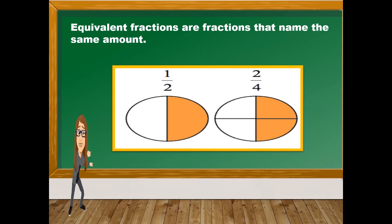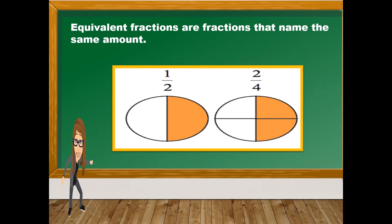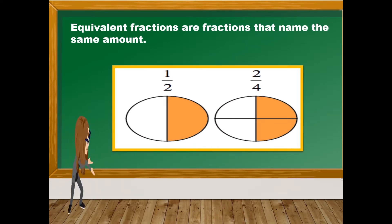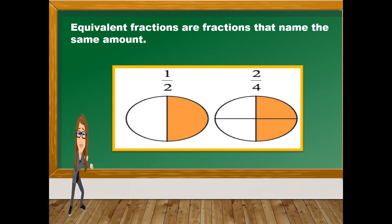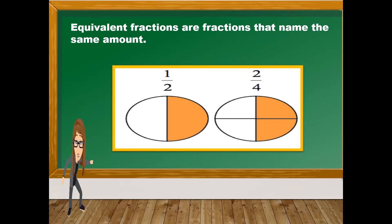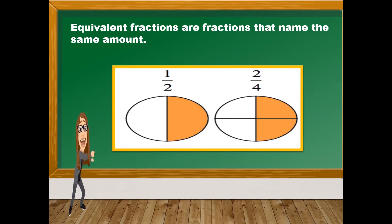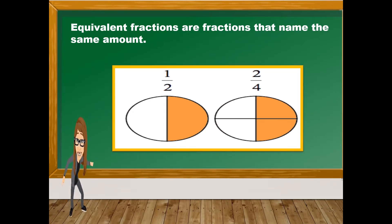Equivalent Fractions are fractions that name the same amount. We have here one-half and two-fourths — so they are the same.